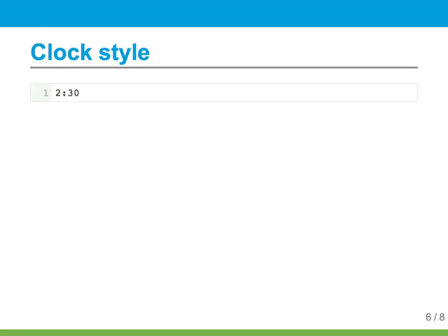I like to call this style clock style because it's written exactly how you'd write down the time of day. This is the second most common style, especially with people who use external timers to track their time. The important thing to watch out for is if you switch between clock style and decimal style: 2:30 means 2 hours and 30 minutes, but 2.30 means 2 hours and 18 minutes.